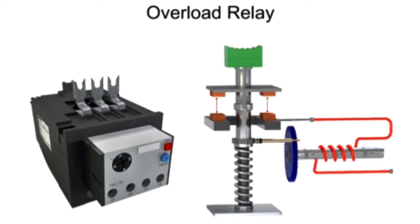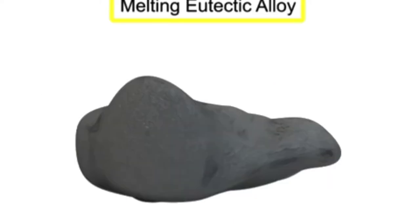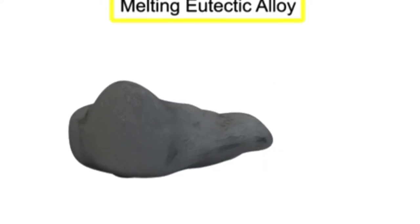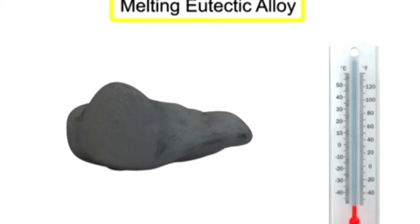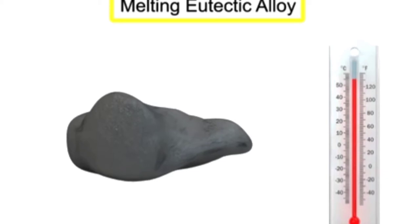The most common type of overload relay uses a melting eutectic alloy. A eutectic alloy is a specific type of metal that changes directly from a solid to a liquid at a fixed temperature.